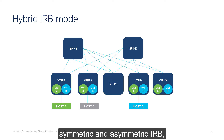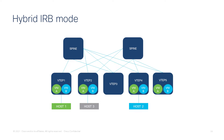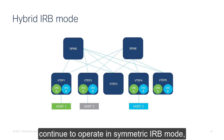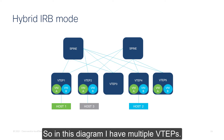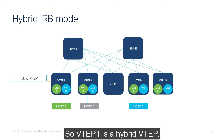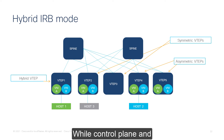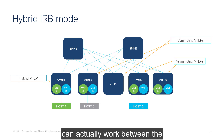Now that we've talked about symmetric and asymmetric IRB, next we will talk about the integration through hybrid IRB mode. Nexus 9000 VTEPs enabled with hybrid IRB mode continue to operate in symmetric IRB mode, which is the more scalable mode. In this diagram, I have multiple VTEPs: VTEP 1 is a hybrid VTEP, VTEPs 2 and 3 are symmetric VTEPs, and VTEPs 4 and 5 are asymmetric VTEPs. While the control plane and data plane needed is identical, there are some constraints on what kind of traffic can work between different IRB modes.